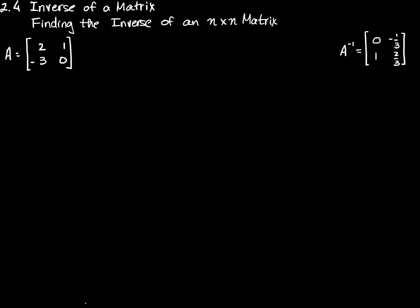Now we know how to find the inverse of a 2 by 2 matrix, and we did that two different ways with matrix A here, and we found that the inverse of matrix A was 0, negative 1 third, 1, 2 thirds. What I'm going to show you now is how to find the inverse of a matrix if it's bigger than 2 by 2. I'm going to do this new process first on a 2 by 2 matrix, just to convince you that it works, because we already know what the inverse of this matrix A is.